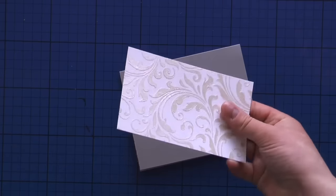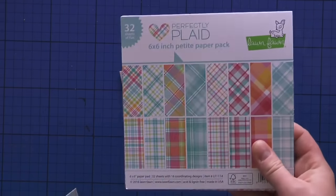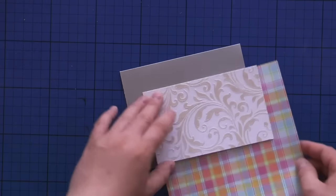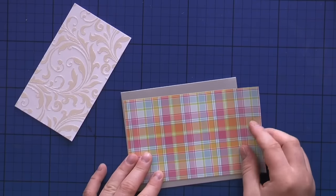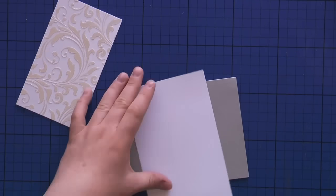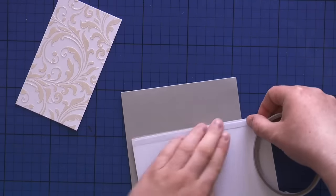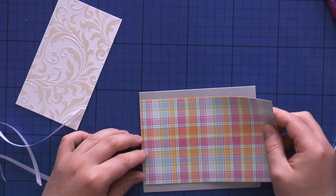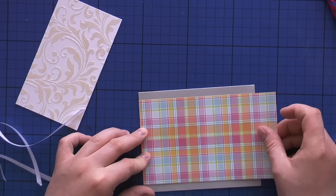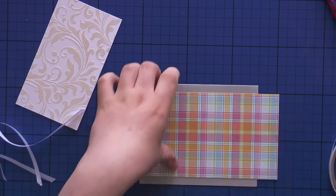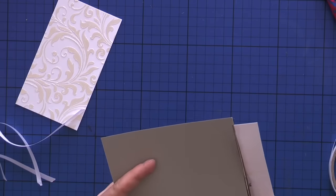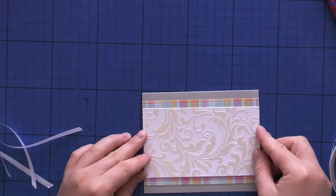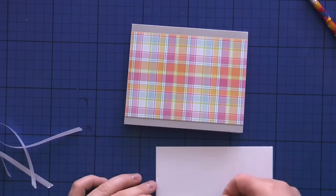For this next card, I'm using the panel with pearl embossing paste. I really like how elegant it looks on the white surface. I'm also going to use pattern paper from Lawn Fawn's Perfectly Plaid. I love this pattern paper set, it's just so gorgeous. I'm going to use a gray card base.